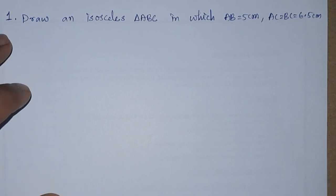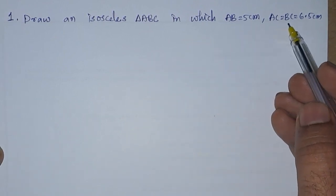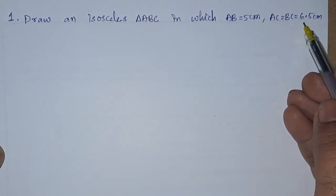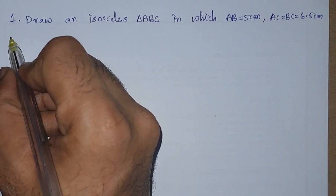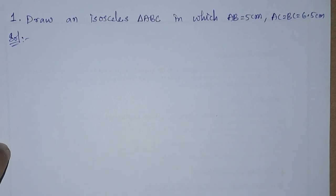First problem: draw an isosceles triangle ABC in which AB equals 5 centimeters, AC and BC both equal 6.5 centimeters. So we need to draw an isosceles triangle. Isosceles triangle means